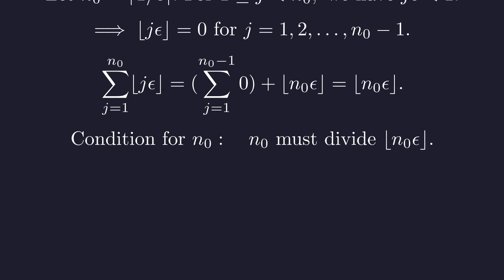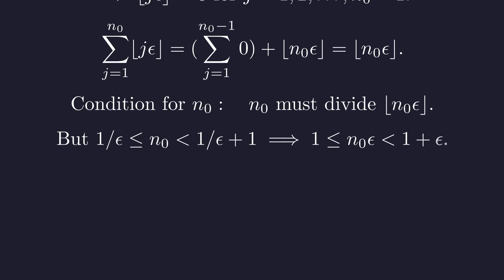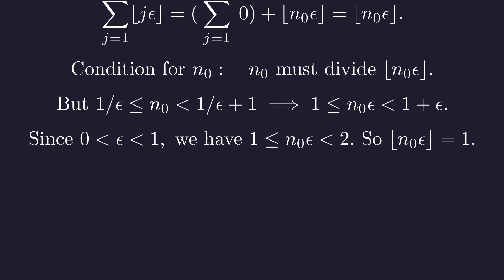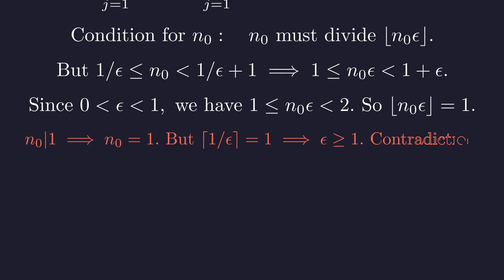So, for our chosen n sub 0, the condition becomes n sub 0 must divide the floor of n sub 0 times epsilon. But let's look closer at that term. By definition of the ceiling function, n sub 0 is between 1 over epsilon and 1 over epsilon plus 1. Multiplying by epsilon gives a tight bound. Since epsilon is between 0 and 1, 1 plus epsilon is less than 2. This pins the value of n sub 0 times epsilon to be between 1 and 2. Because it can't be an integer, its floor must be exactly 1.